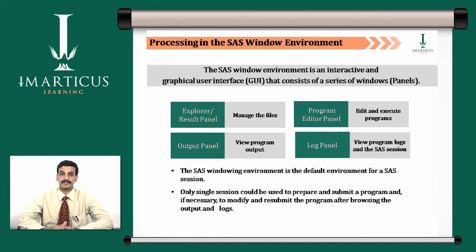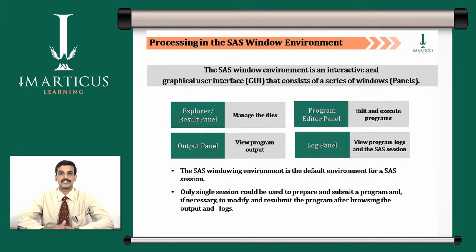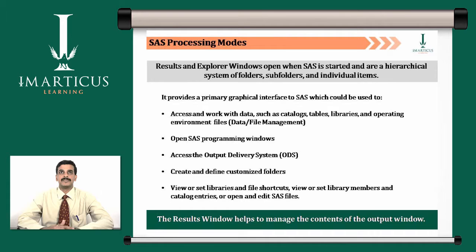In case your program compiles and executes successfully, it will show you the output in the output window. You can see the output in the traditional SaaS output window, or you can generate interactive reports and write that output to various other formats like HTML, RTF, or PDF.